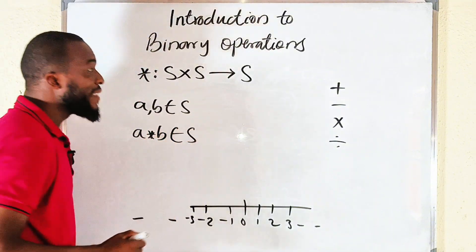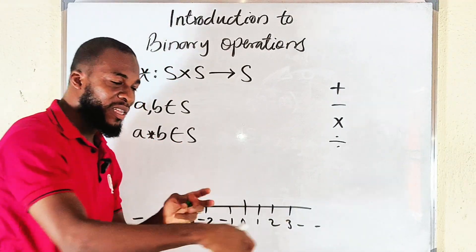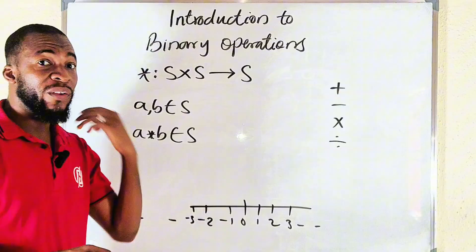The result must also be in that set. You see this condition: the two elements must be from the set, the result must also be within the set, otherwise the operation will fail.